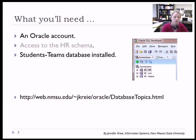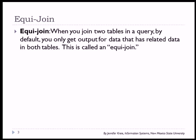So let's look at One-sided Outer Joins. When you join two tables in a query, by default, you get output for data that has related data in both tables, and this is called an Equijoin.